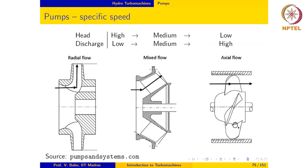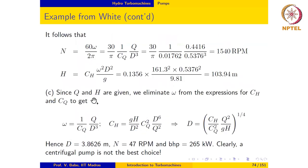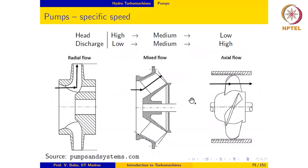If the blade passage is opened further to increase flow rate even more, we end up with an axial flow pump — a purely axial flow machine with no radial component at all. The fluid has only an axial component and a tangential component. The blade passage is quite wide, so it can handle a very high flow rate, but the head developed is not very high. This is ideally suited for low head and high flow rate applications — exactly the sort we are looking for in this case.